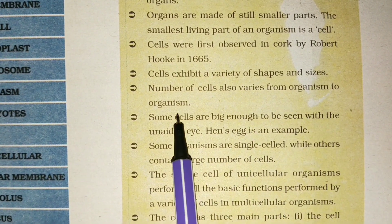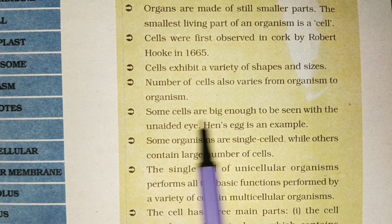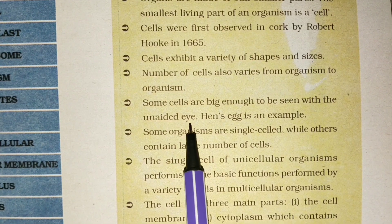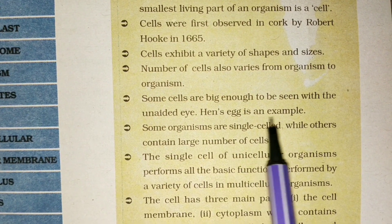from organism to organism. Some cells are big enough to be seen with the unaided eye. Hen's egg is an example.